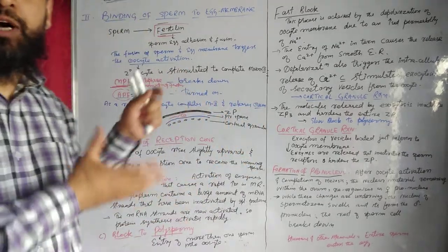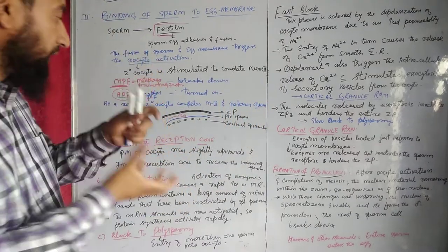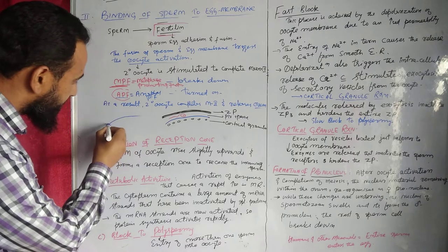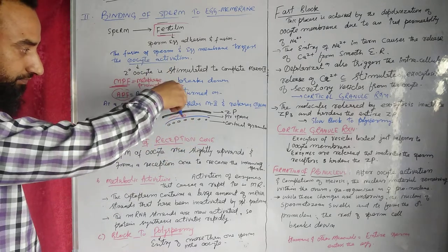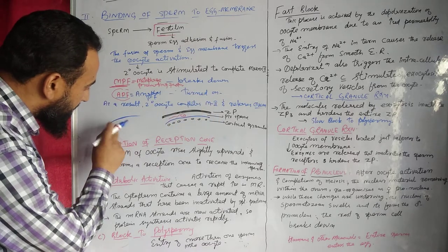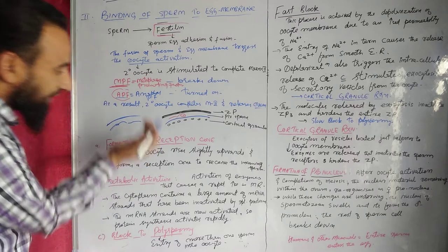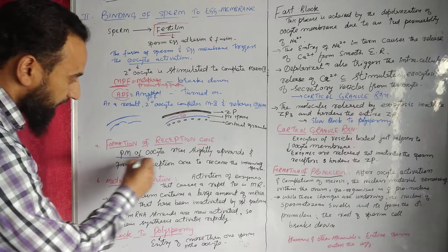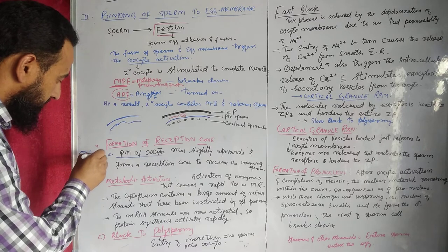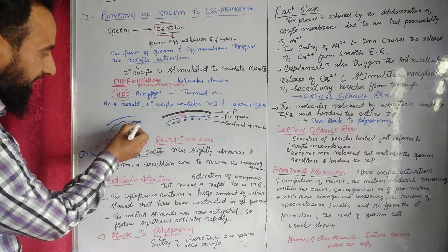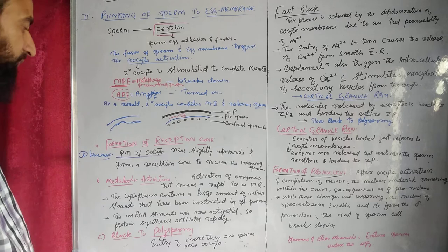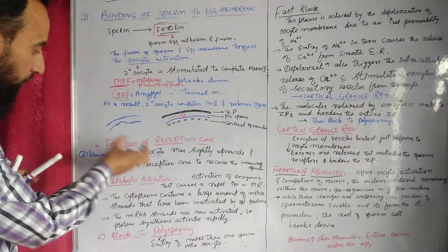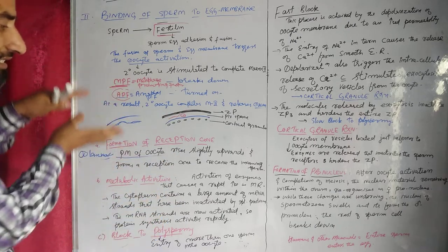For the formation of the reception cone — let us consider the sperm as the groom coming in. The sperm drills through the zona pellucida. The plasma membrane of the secondary oocyte — also known as the oolemma — rises slightly upward and forms a reception cone to receive the incoming sperm.